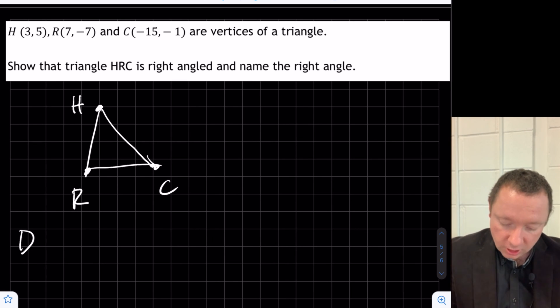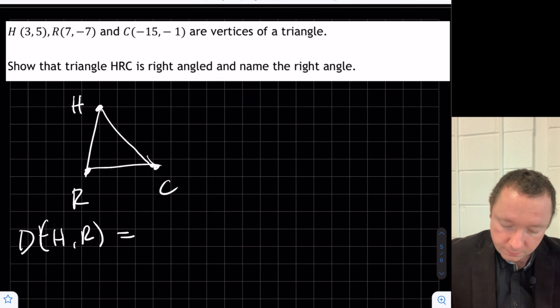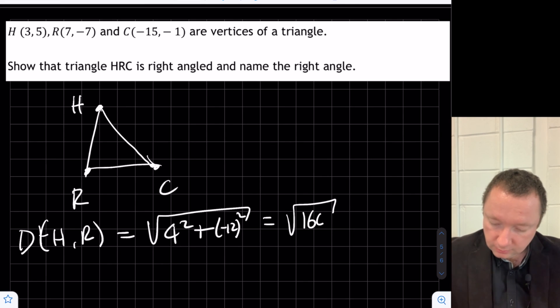So the distance from H to R, we've got 7 take away 3, 4 squared plus minus 7 take away 5, minus 12 squared. 4 squared is 16, 12 squared is 144, so that's 160. And 160 is 16 times 10, so we get 4 root 10.